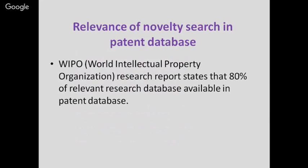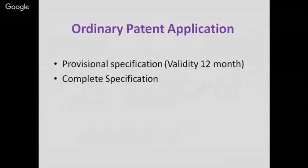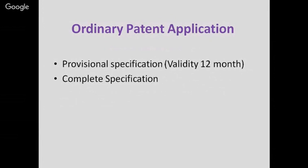WIPO — the World Intellectual Property Organization — is a global forum for intellectual property services, policy, information, and cooperation. Its headquarters is in Geneva, Switzerland, and it was established in 1970 under the United Nations. Their research report states that 80 percent of the relevant research database is available in the patent database, and the online database can be accessed through PatentScope. An ordinary patent application consists of a provisional specification with validity of 12 months, followed by complete specification.